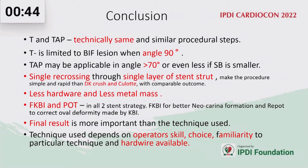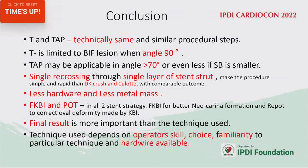T and TAP are technically similar procedures. T is limited to bifurcation lesions when the angle is 90 degrees or close to 90 degrees. TAP may be applicable at 70 degrees or more. There is single recrossing through a single layer of stent in TAP, which is the main advantage — making the procedure simpler, more rapid, with less hardware and less metal mass. Final kissing balloon and POT, as in all two-stent strategies, are very important steps. The final result is more important than the technique used, and technique depends on operator skill, familiarity, choice of technique, and hardware available in your cath lab.